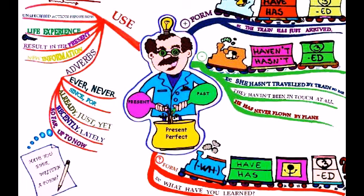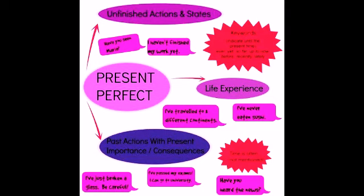Look at the graph — present perfect tense. Past and present. Present perfect tense uses has, have, and third form. He, she, it — we use 'has'. We, they, and plural subjects — we use 'have'. Unfinished actions and status — situations that are unfinished. Life experiences. Past actions with present importance and consequences. Like: I have traveled to three different continents.